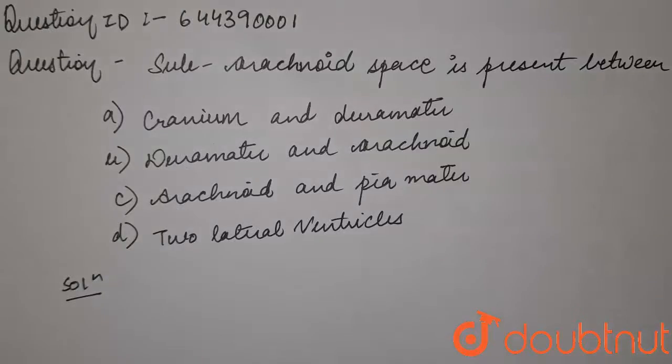Subarachnoid space is present between: a) cranium and durameter, b) durameter and arachnoid, c) arachnoid and pyameter, and d) two lateral ventricles.